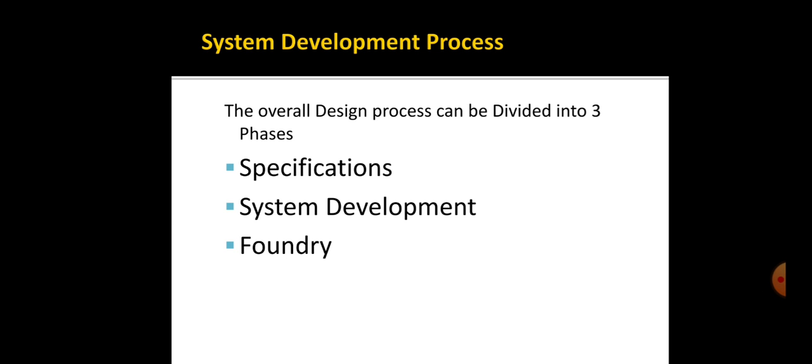Good afternoon students, welcome back. In continuation with the last lecture, we are going to see the second part: the system development process of design flow used in the identification of each pattern. The overall design process can be divided into the following three phases: specification, system development, and foundry.